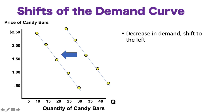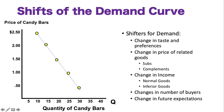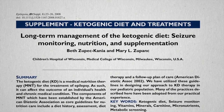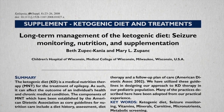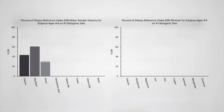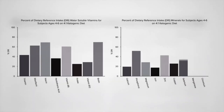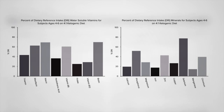How can we shift demand? There are five different shifters for demand. First: change in taste and preferences. For example, if big studies come out showing that the keto diet is unhealthy and people are getting heart problems, our taste and preferences change and we no longer purchase as much beef. That means the curve would shift to the left.